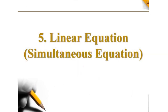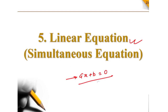In today's class we are going to discuss about linear equations. What is a linear equation? It is of the form ax plus b equal to 0. If this is the case, then we can say this is a linear equation. It does not mean that a is always some value — sometimes a will be 0 and sometimes b will be 0.